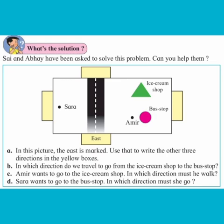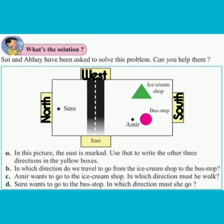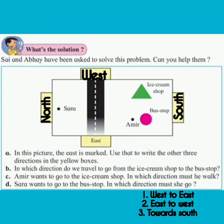In which direction do we travel to go from the ice cream shop to the bus stop? West to east. Aamid wants to go to the ice cream shop — in which direction must he walk? East to west. Sara wants to go to the bus stop — in which direction must she go? Towards south.